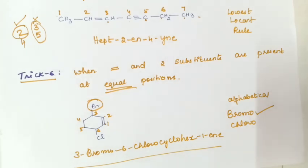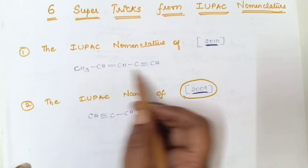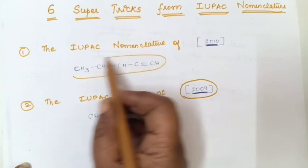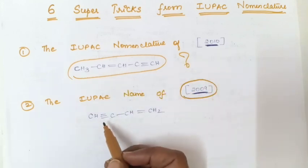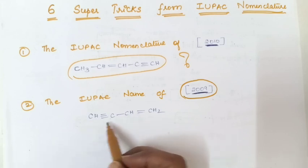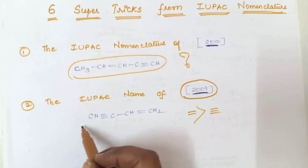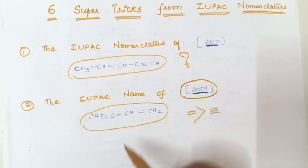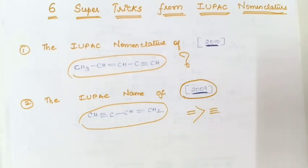So students, now using these tricks, I think you will be able to solve the two exam questions. For the first question, double bond and triple bond are at different positions — follow the lowest locant rule. For the second question, double bond and triple bond are at equal position — give preference to double bond. Write your answers in the comment box. I hope this video is very useful. Please subscribe to the channel and share this video with your friends. I'll meet you in the next video. Bye-bye.